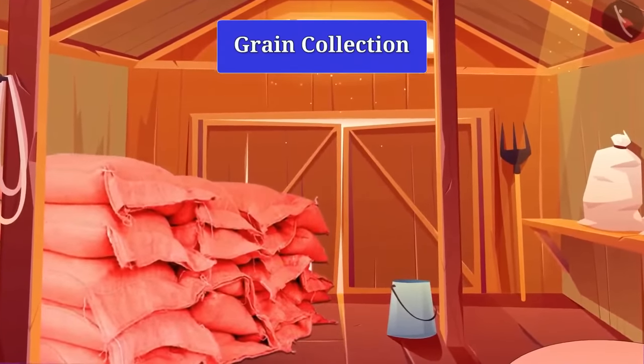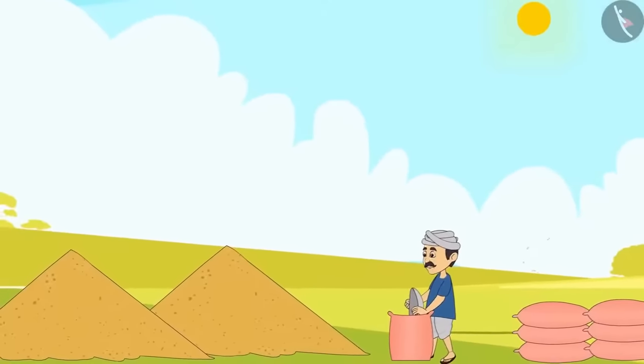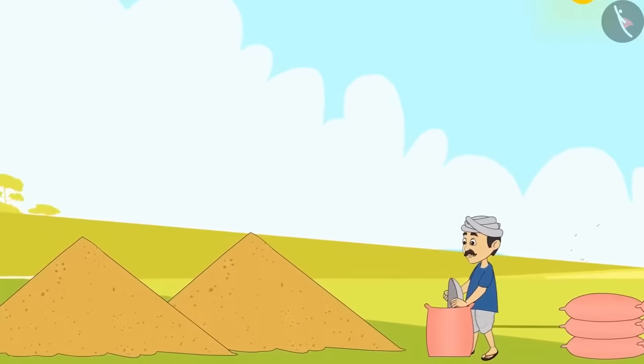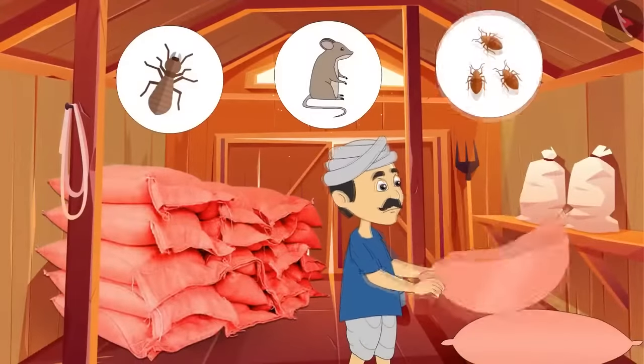Do you know how to store grains? The grains can be stored by spraying chemicals and drying them in sunlight before storing, which keeps away all insects, mice and microorganisms.